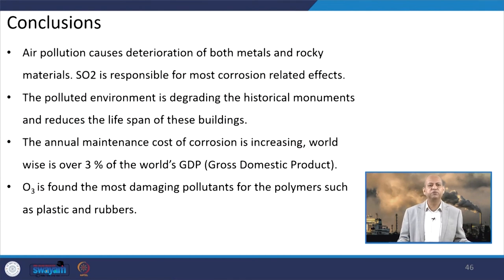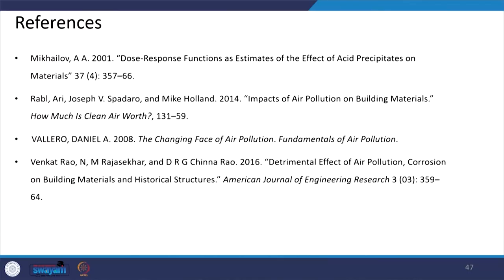Ozone has been found to be the most damaging pollutant for polymers such as plastics and rubbers. For property protection, reduction is needed not only for criteria pollutants but also for secondary pollutants like ozone. To reduce ozone concentration, we have to reduce its precursor concentrations like VOCs, CO, and NOx, which contribute to ozone formation. This is all for today. Thank you for your kind attention. Here is the reference list which you can go through for more information about the topics discussed. See you again in the series of these lectures.